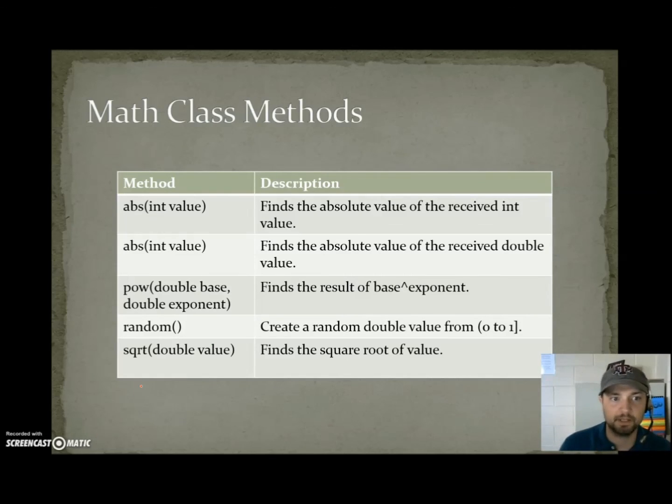The Math class has several methods for making calculations. Absolute value int, or abs(int value), finds the absolute value of an int. Absolute value double finds the absolute value of the received double value. pow will get the result by taking the given double base to the given double exponent, and the answer will be a double. random creates a random double value from 0 to 1, but not including 1. It can include 0, so it could be .99999. sqrt, or square root(double value), finds the square root of a value, and that result will be a double.